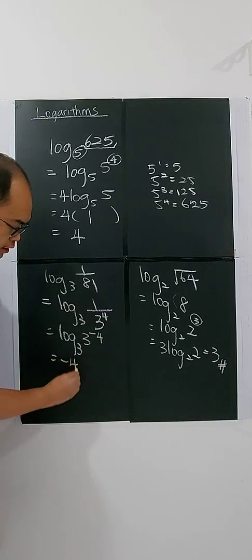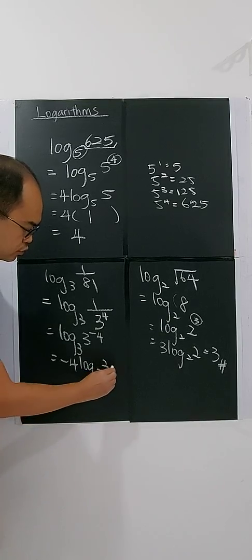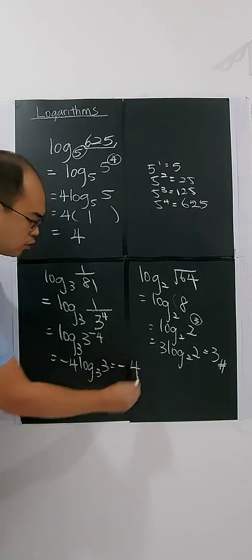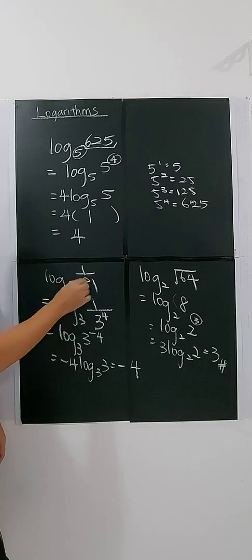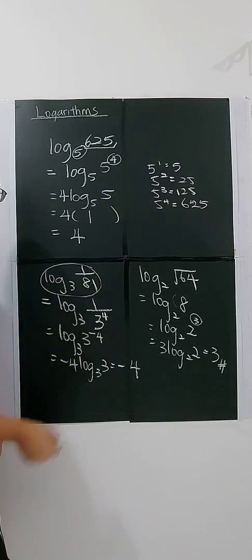We bring down the negative, then you have log 3 base 3, which give you negative 4. This is how you evaluate a log without using calculator.